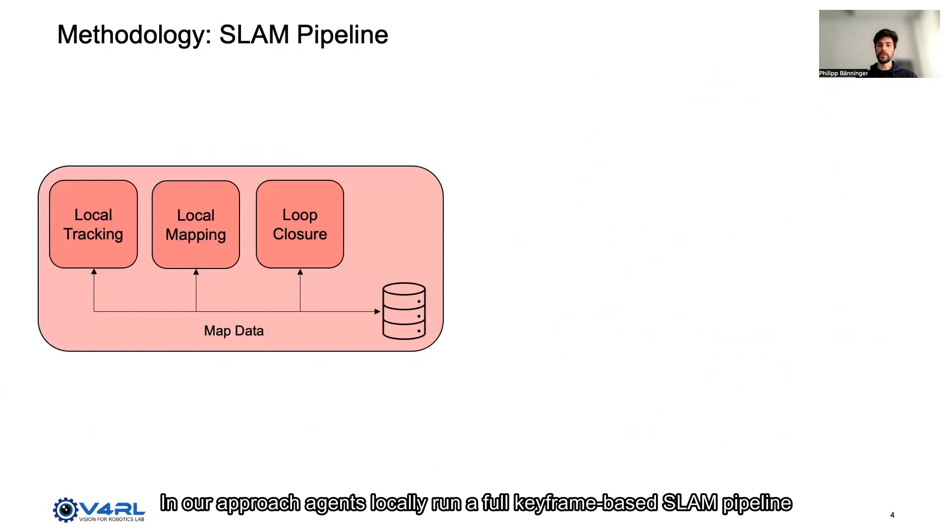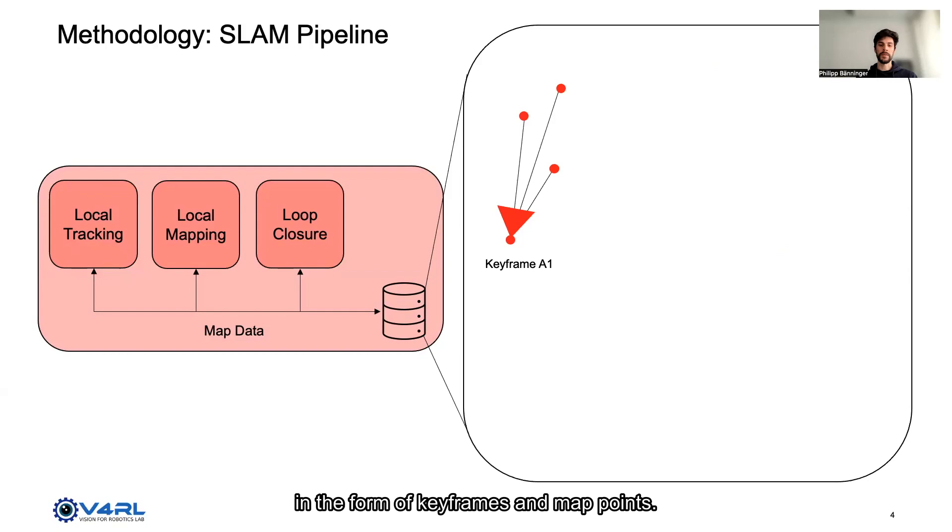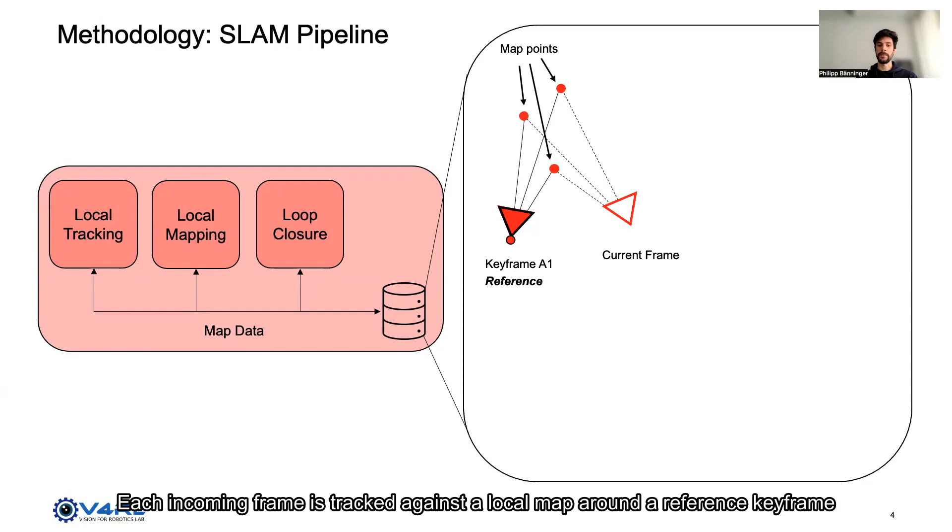In our approach, agents locally run a full keyframe-based SLAM pipeline consisting of local tracking, local mapping, and loop closure. This pipeline produces and consumes map data in the form of keyframes and map points. Each incoming frame is tracked against a local map around the reference keyframe. The map is extended as necessary and the reference is shifted to the nearest keyframe to the current frame.